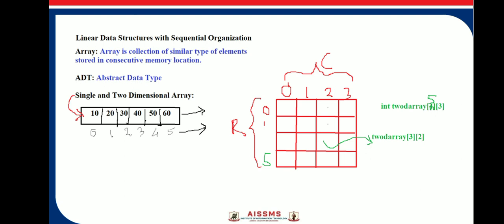Let us consider integer two array, where integer is the data type and two array is the name of the array. The size of this array is written as row by column. We can see R is a row, 0, 1, 2, 3, 4, 5 are the columns. So row by column. In this case it is written as integer two array 5 by 3. The size of array is written in square brackets.